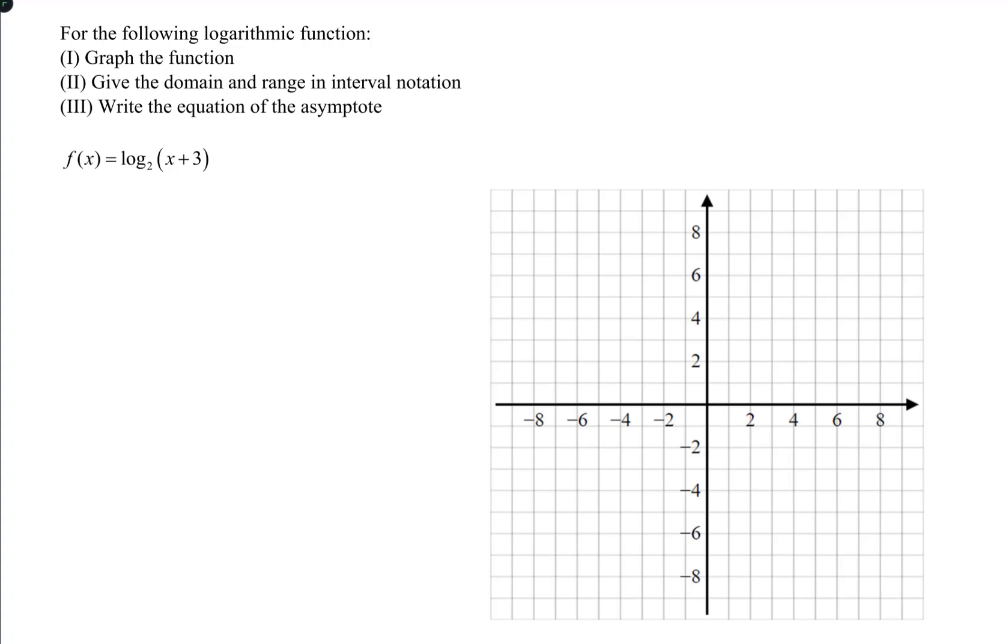Now before we jump into drawing a graph, it's probably helpful to think about what the basic graph of a logarithmic function would look like. So a logarithmic function has a vertical asymptote which is right along the y-axis, and there's a single point on the x-axis that's one unit in front of the asymptote where the logarithm changes from growing very rapidly to growing very slowly.